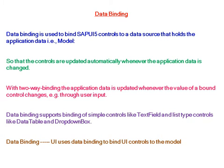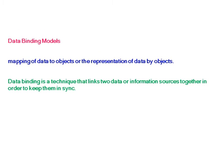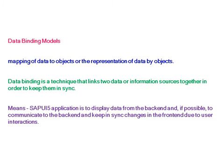The UI uses data binding to bind UI controls to the model. Data binding models represent the mapping of data to objects. Data binding is a technique that links two data or information sources together in order to keep them in sync. This means a SAPUI5 application is used to display data from the backend and, if possible, to communicate to the backend and keep in sync changes in the frontend due to user interactions.